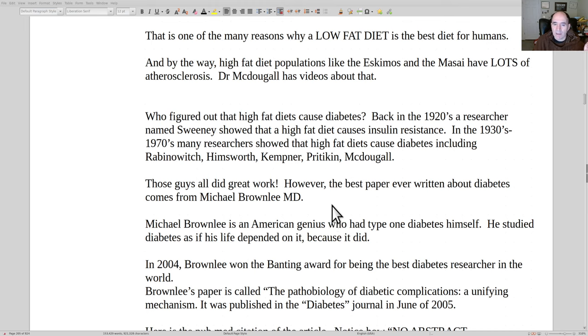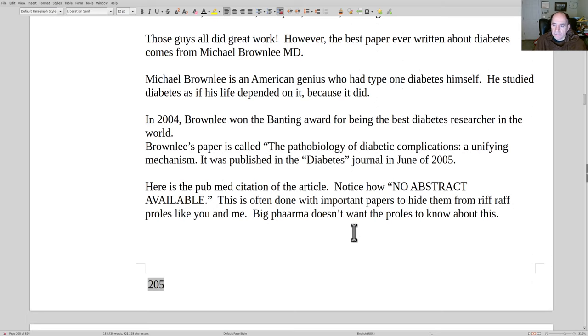The best paper ever written about diabetes was one written by Michael Brownlee. He's a genius. That paper's a total academic orgasm, it's so brilliant, so beautiful. I almost wanted to cry when I read it. It's just so great. He won the 2004 Banting Award as the best diabetes researcher in the world. The name of the paper is The Pathobiology of Diabetic Complications, A Unifying Mechanism, and it was published in the Diabetes Journal of 2005.